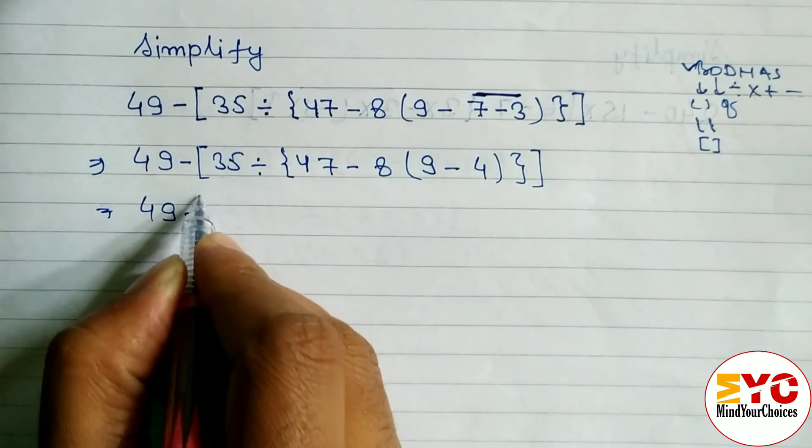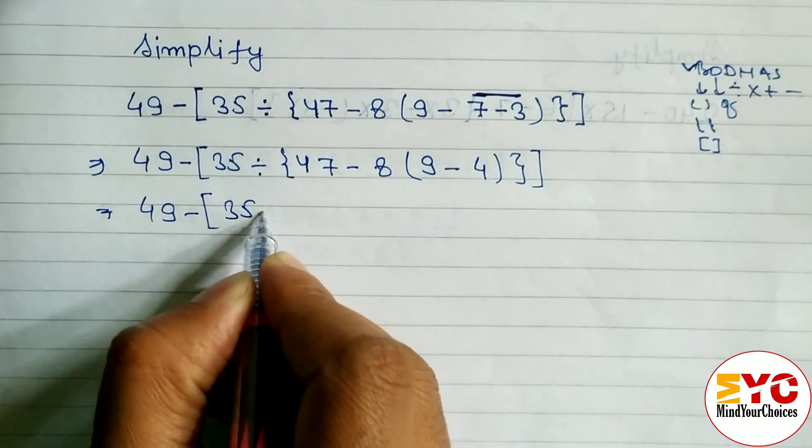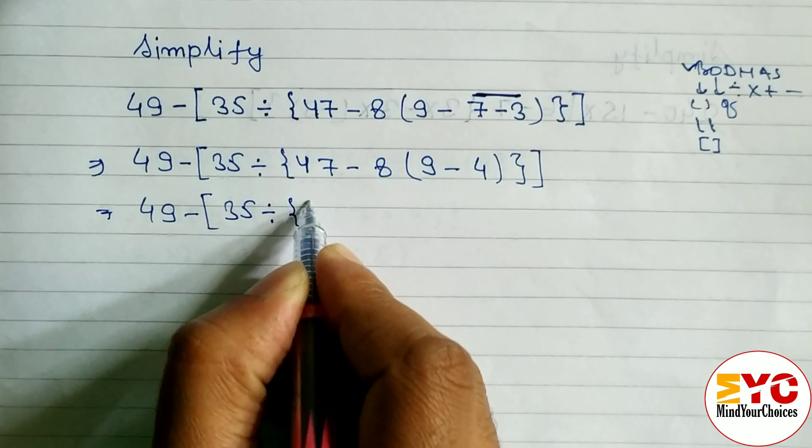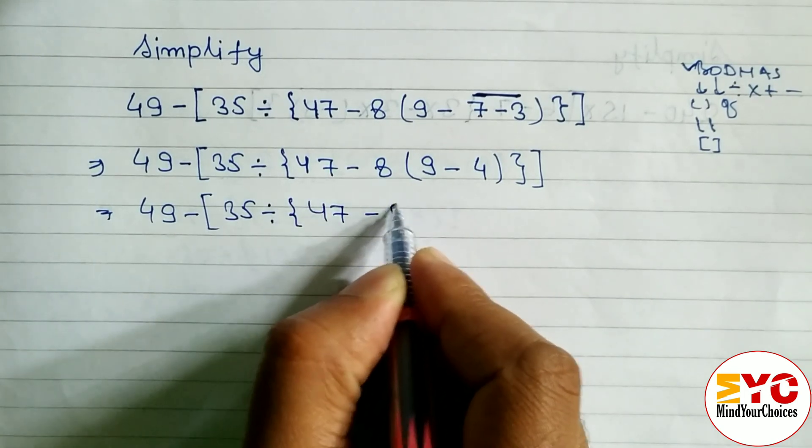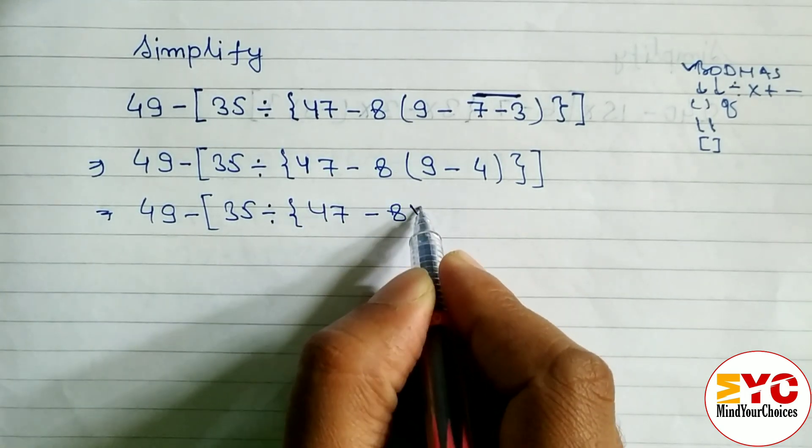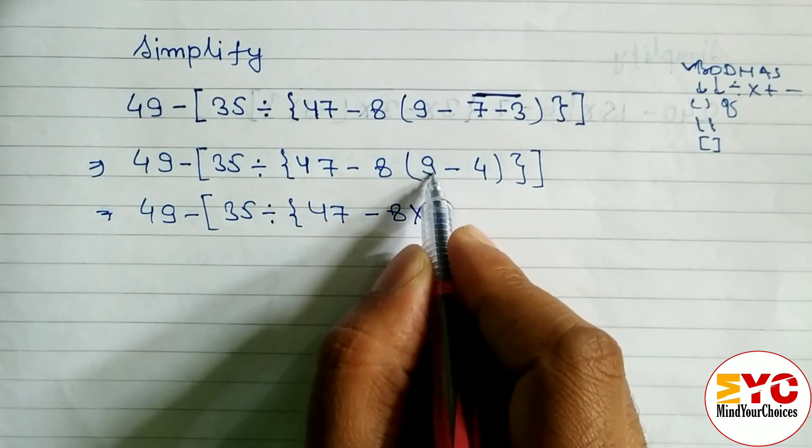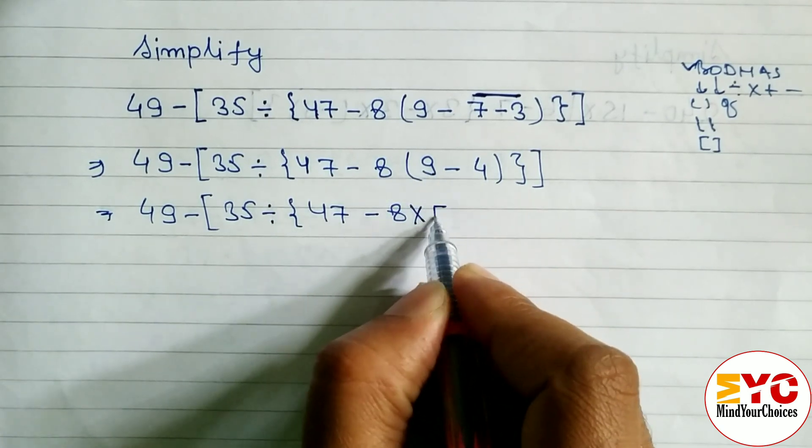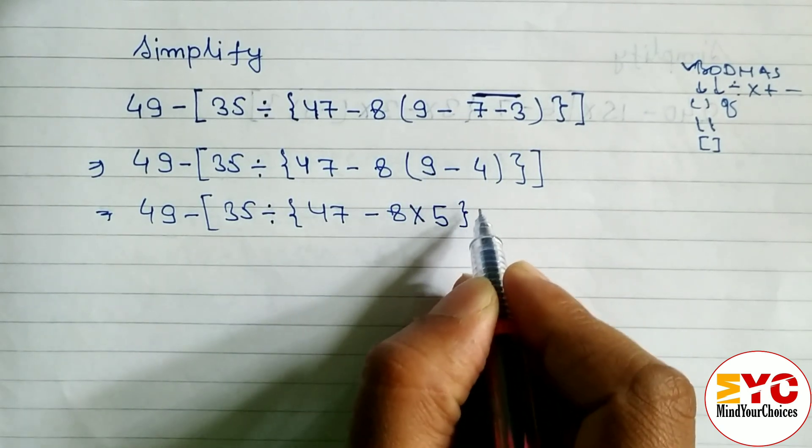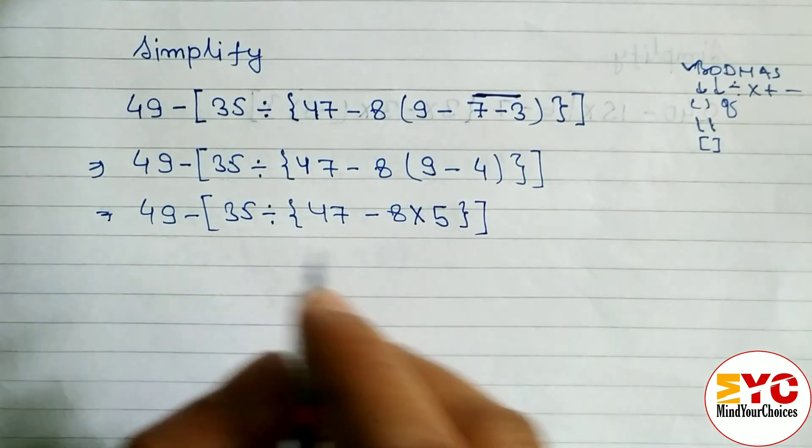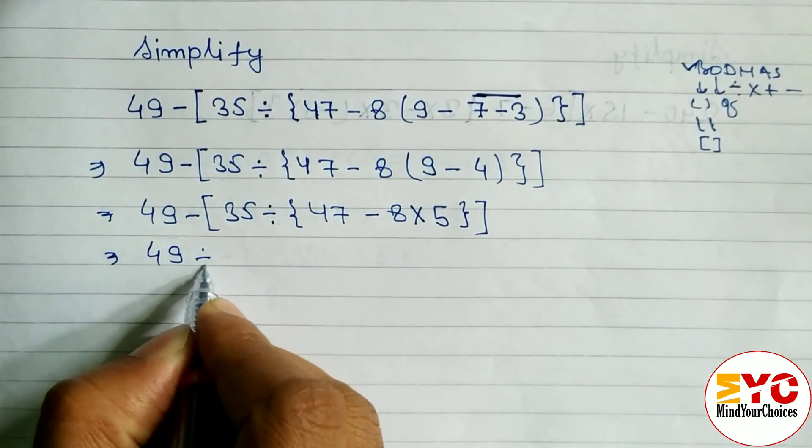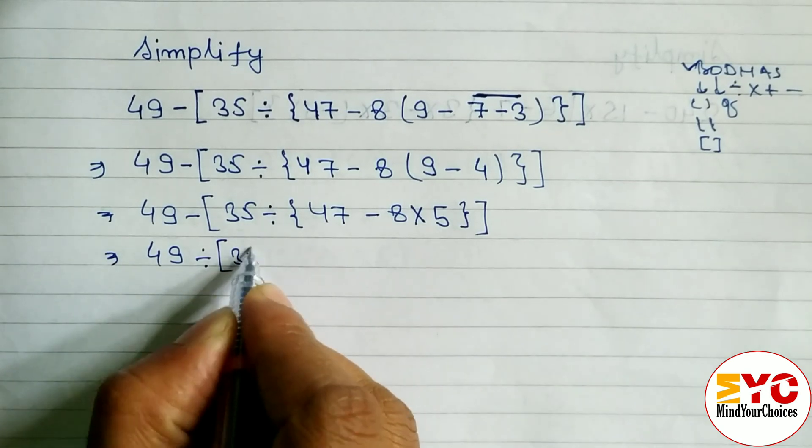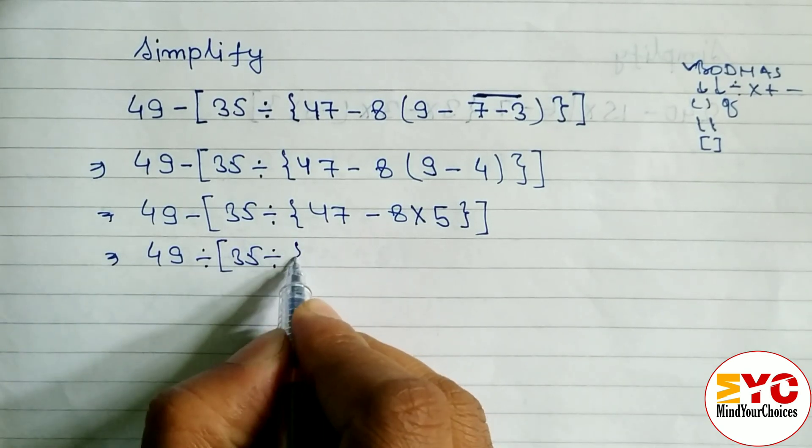After that, 49 minus here we have to write 35 divide 47 minus 8, here is nothing. Then we have to write multiply, and we have to solve this: 9 minus 4 we get 5. So we have to write 5 and close the curly bracket and big bracket.